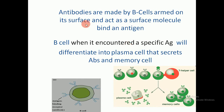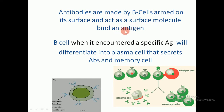Antibodies are made by B cells. The source of antibodies are B cells, which carry them on their cell surface and act as surface molecular receptors that bind to an antigen. This is the B cell, and this is the antibody on the cell surface of the B cell.